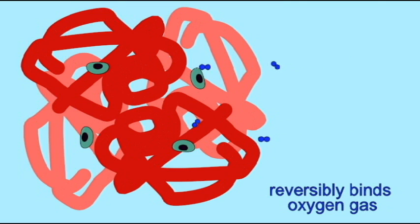Hemoglobin reversibly binds oxygen. In other words, oxygen can bind to hemoglobin but then can also be released from it.